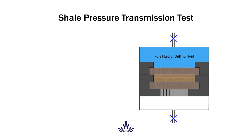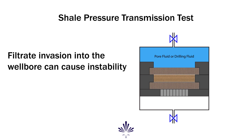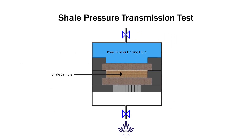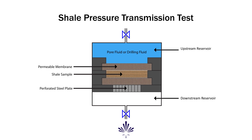While drilling at overbalanced pressures, the filtrate of a drilling fluid can permeate the shale fabric of the wellbore. This leads to an increase in the near-wellbore pressure, which can result in wellbore instability. The shale pressure transmission test measures the degree to which filtrate is able to invade the pore space of a formation. A core sample is placed between two permeable membranes that separate the sample from upstream and downstream fluid reservoirs. The reservoirs are pressurized to simulate downhole conditions and allowed to come to equilibrium. The pressure on the upstream reservoir is then increased, with the change in downstream pressure recorded to indicate the degree of filtrate invasion into the wellbore.